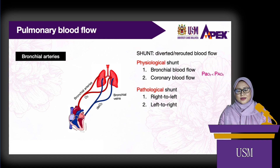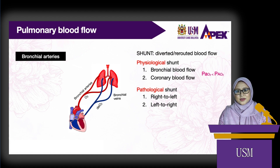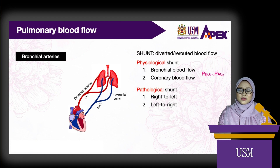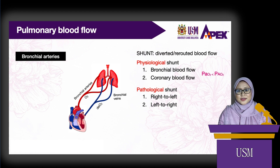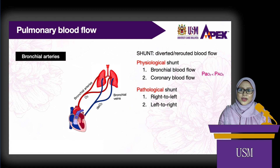Right-to-left shunt can occur if there is a defect in the wall between the right and left ventricles. In this shunt, hypoxemia always occurs because a significant amount of the cardiac output is not delivered to the lungs for oxygenation. Left-to-right shunts are more common, such as in patent ductus arteriosus and traumatic injury. These shunts do not cause hypoxemia because the oxygenated blood that has just returned from the lungs is added directly to the right heart without being delivered to the systemic tissues.